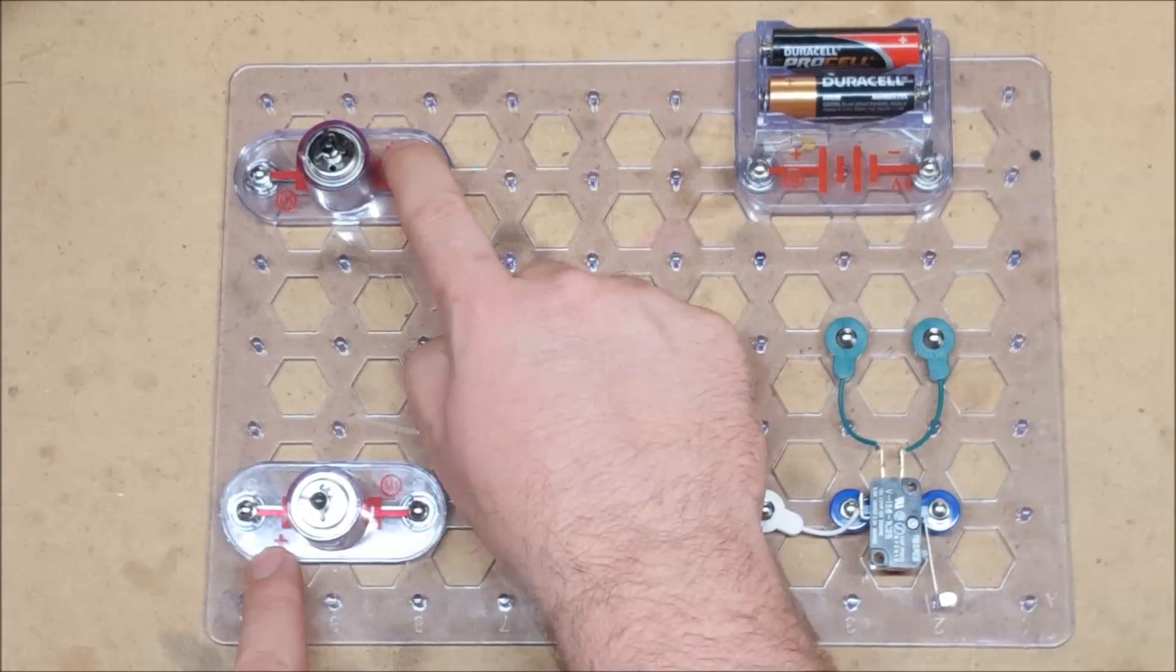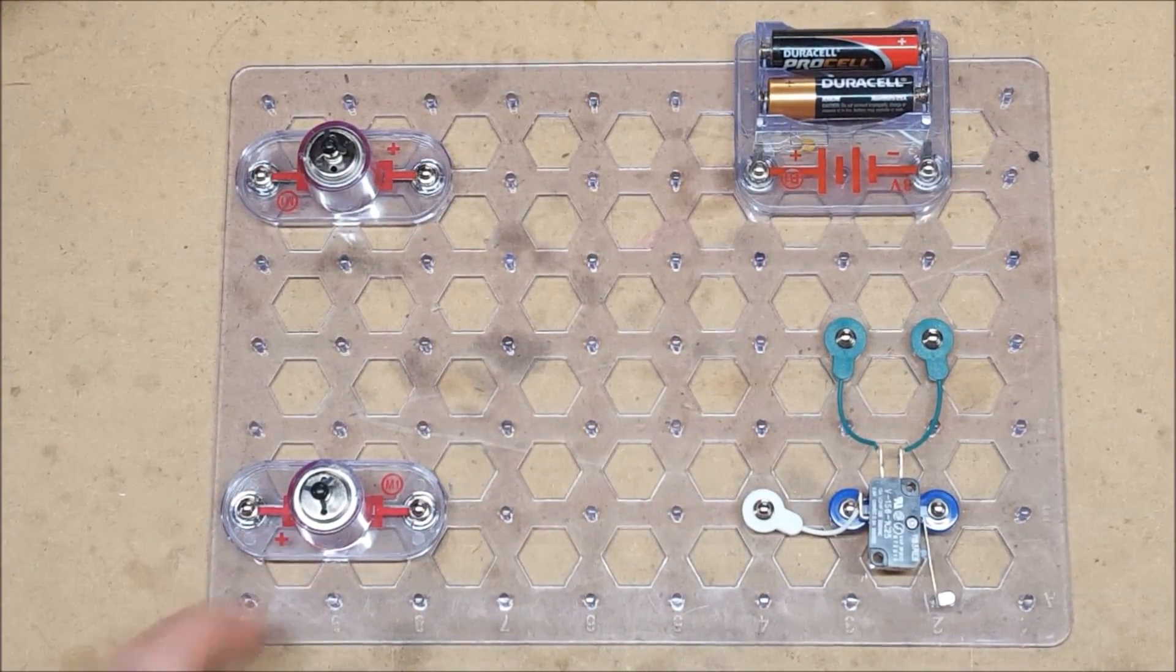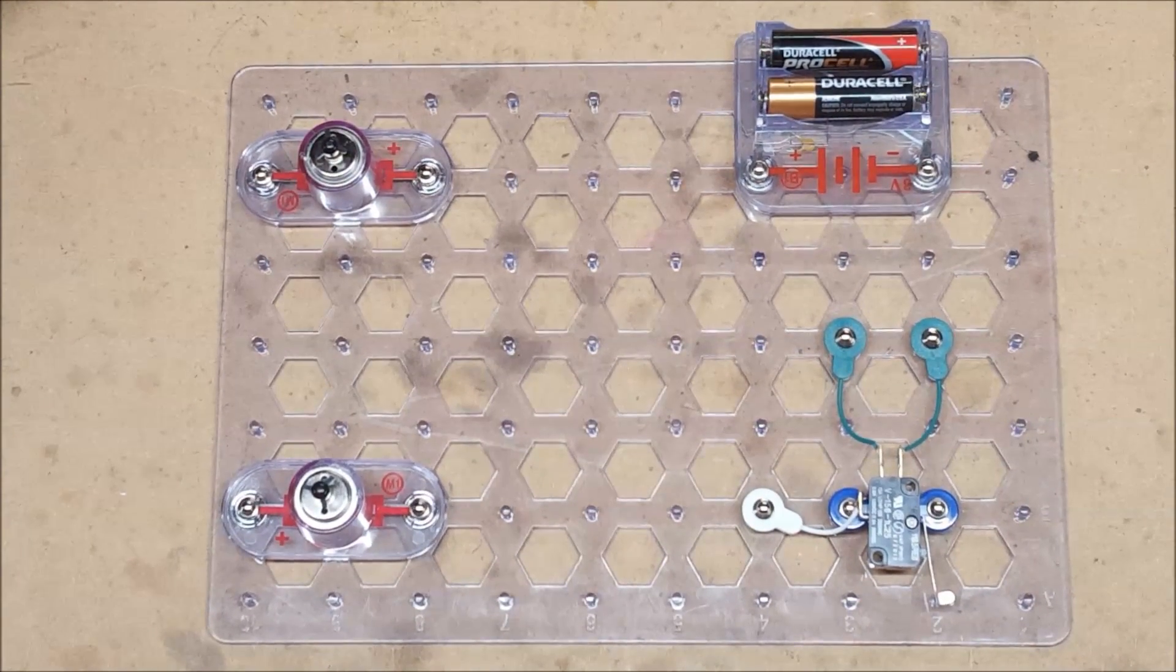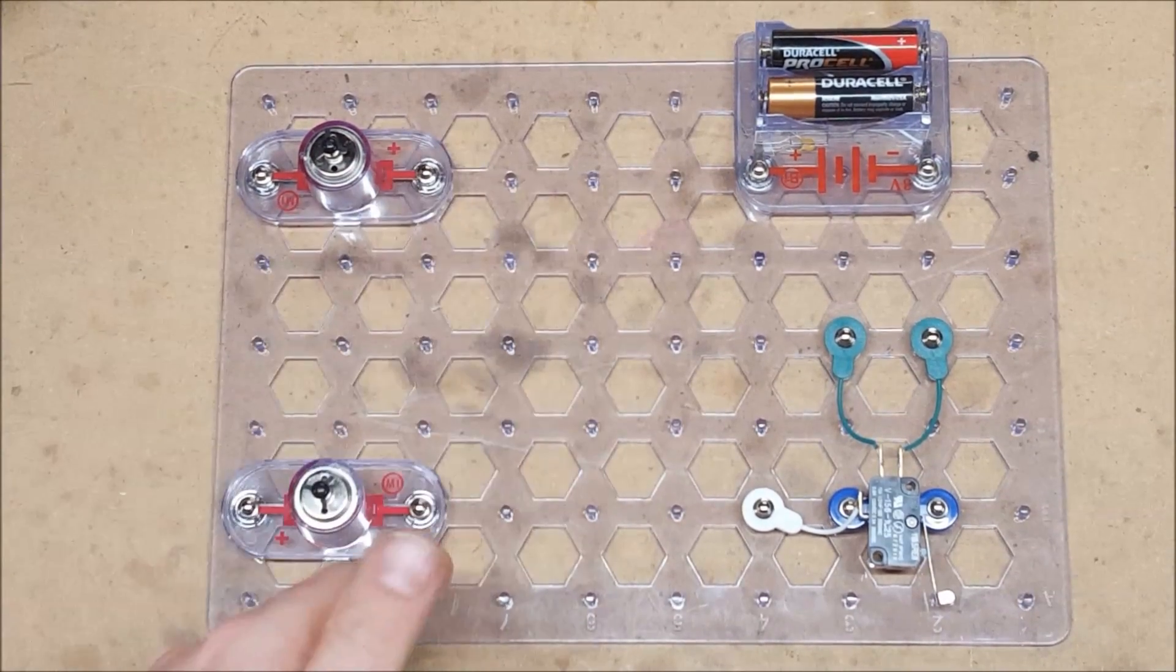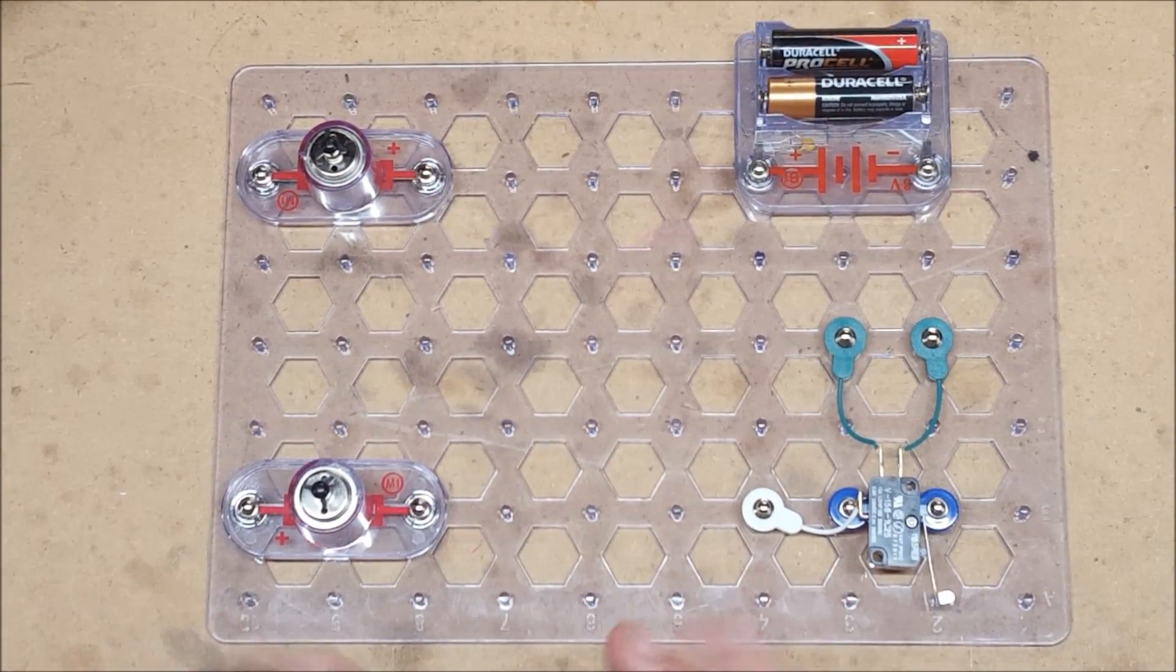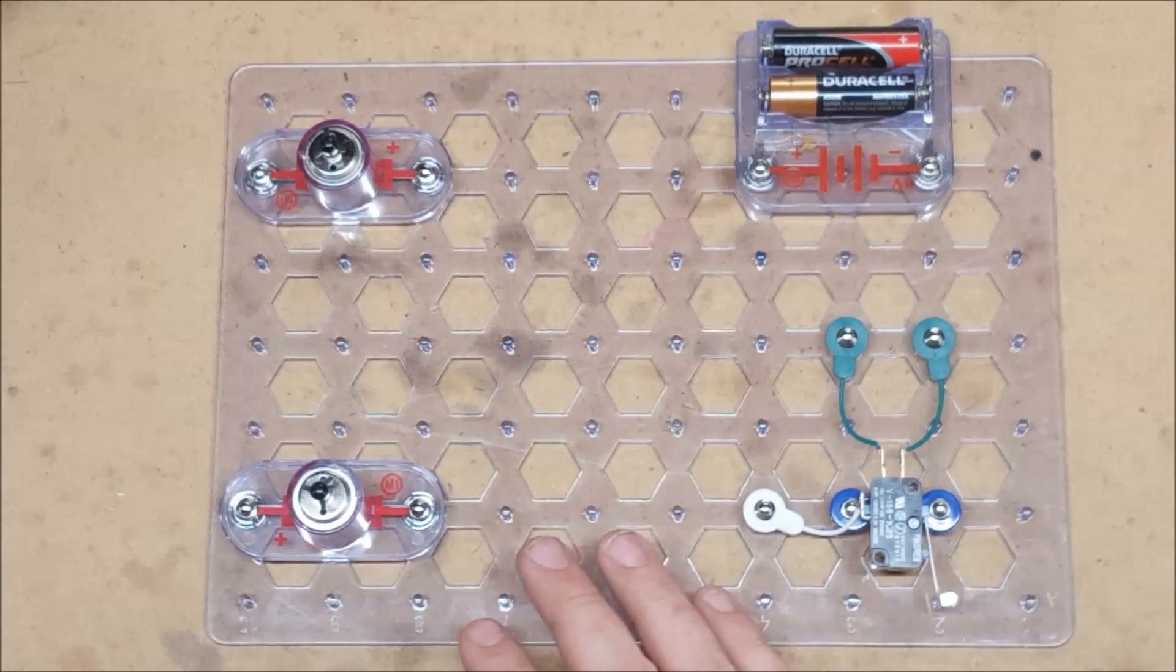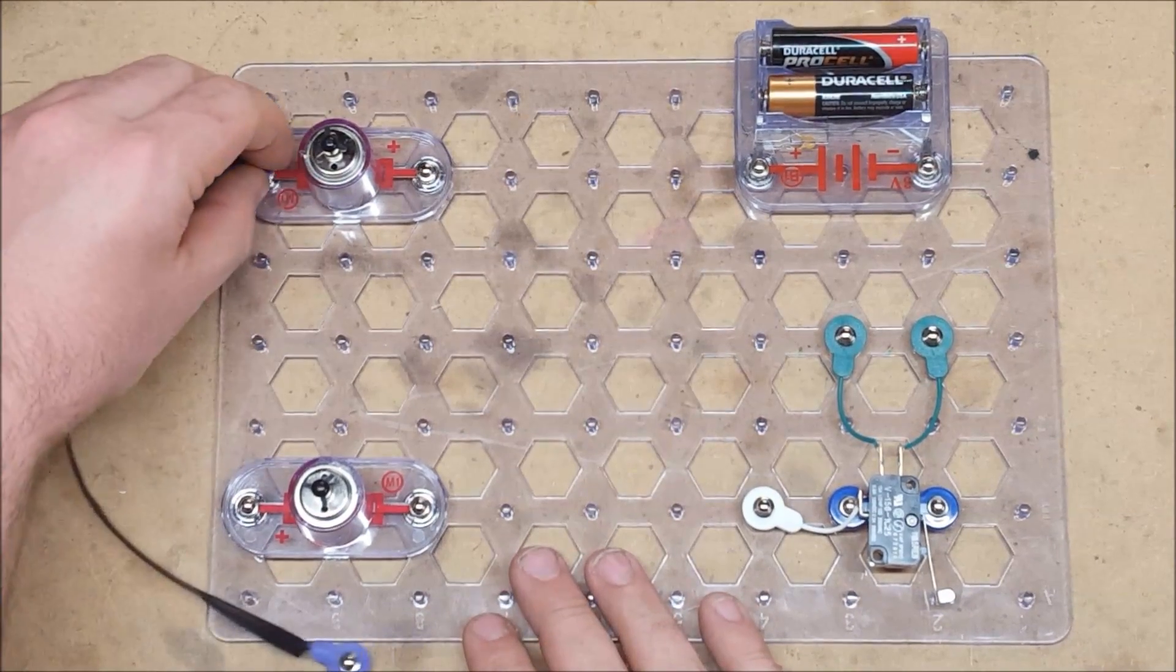And you'll notice that the motors have been set up opposite of each other. So the positive is on this side, and the positive is on this side, so that they will spin in opposite directions if wired correctly. You can go the other way around and then you just have to cross the wires instead of having them come directly across, which some people like if they're going to have a clear window on the side of their blaster. So, very simple wiring.